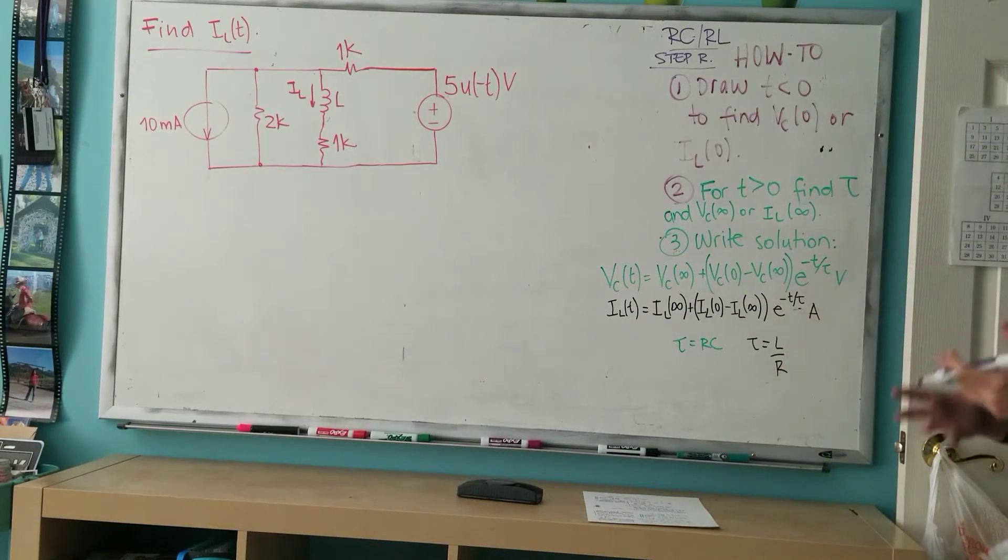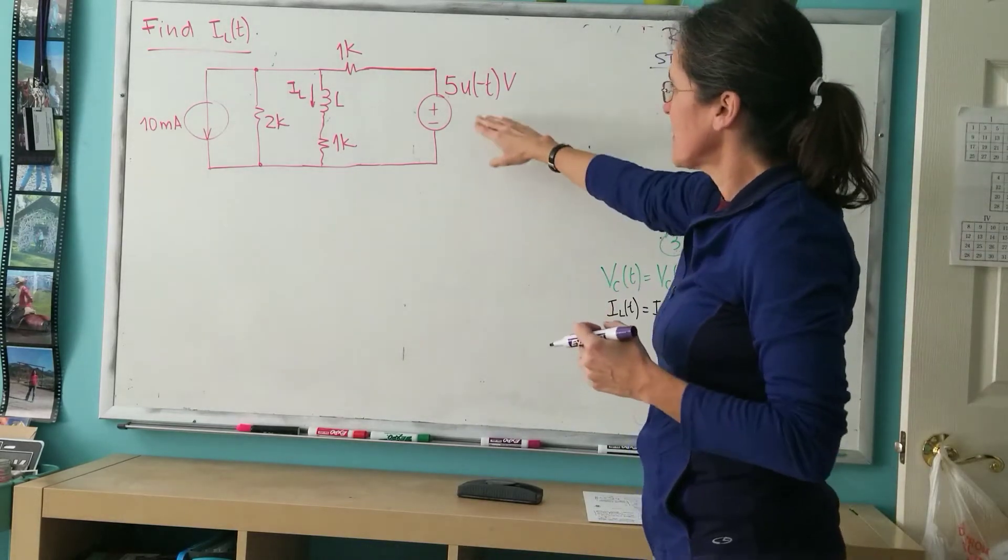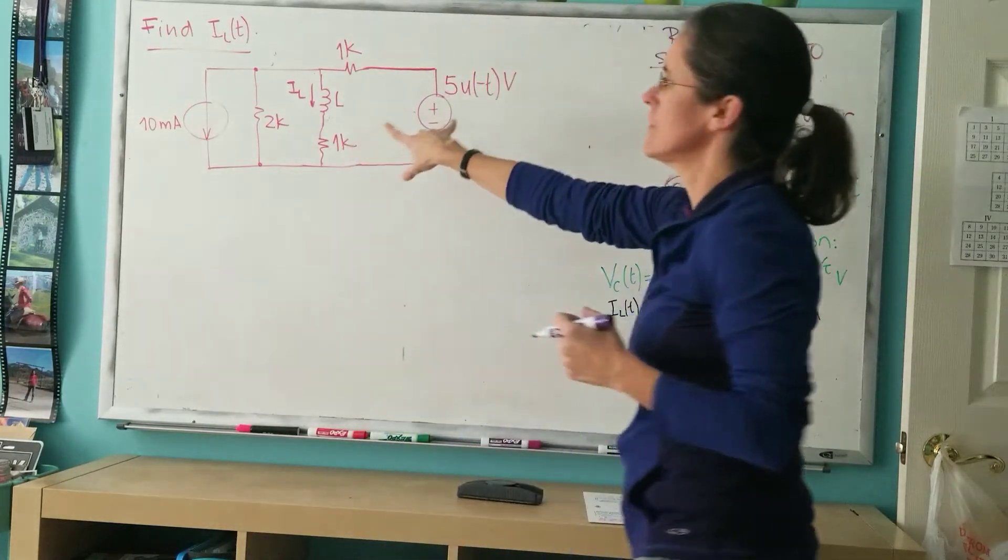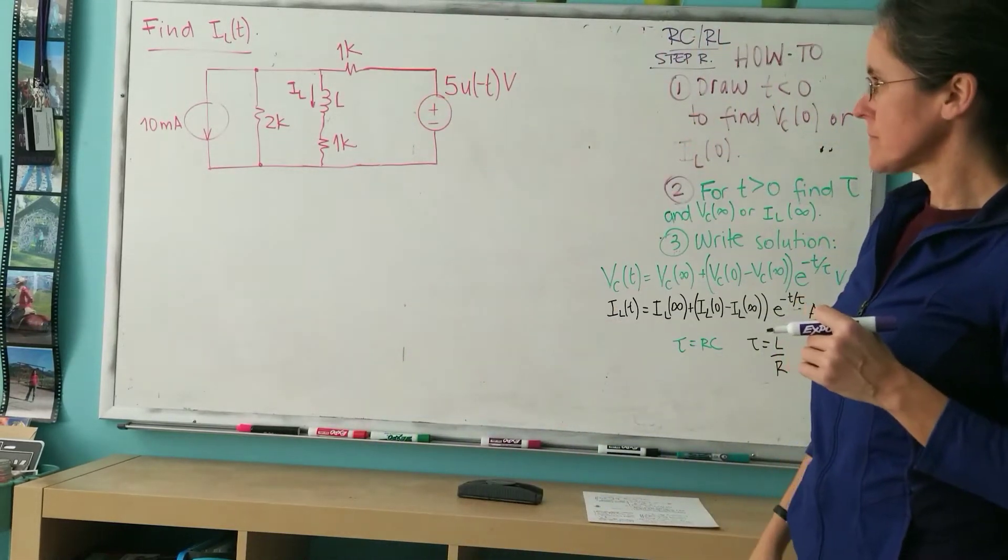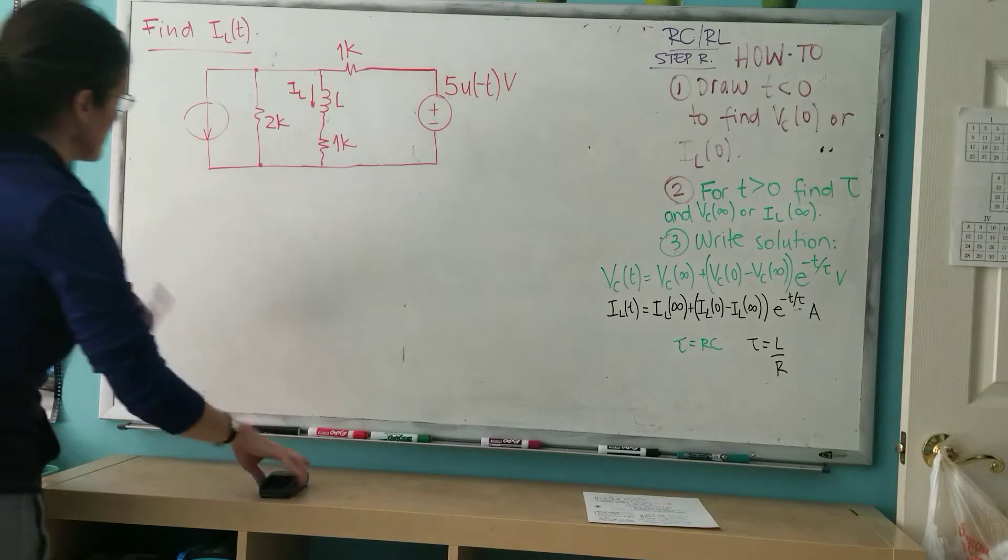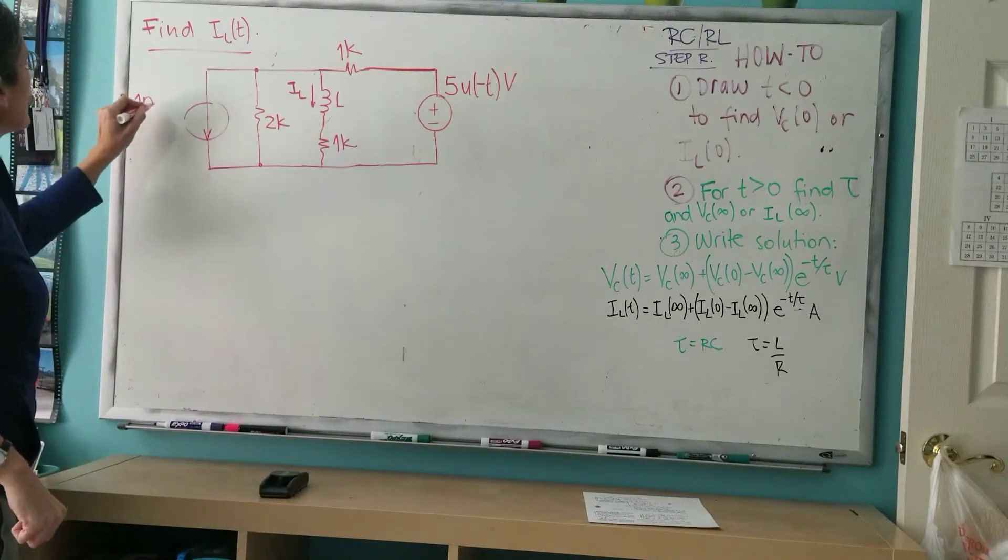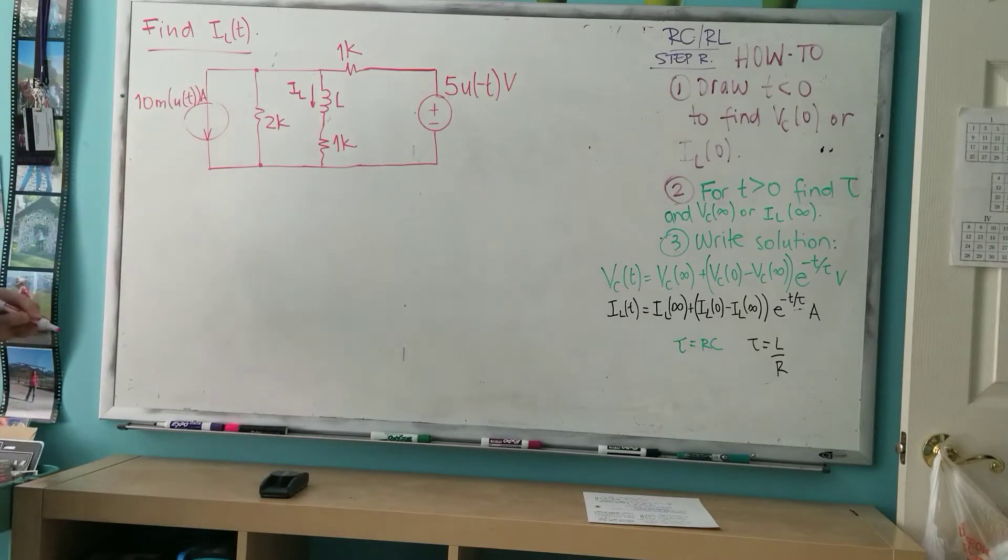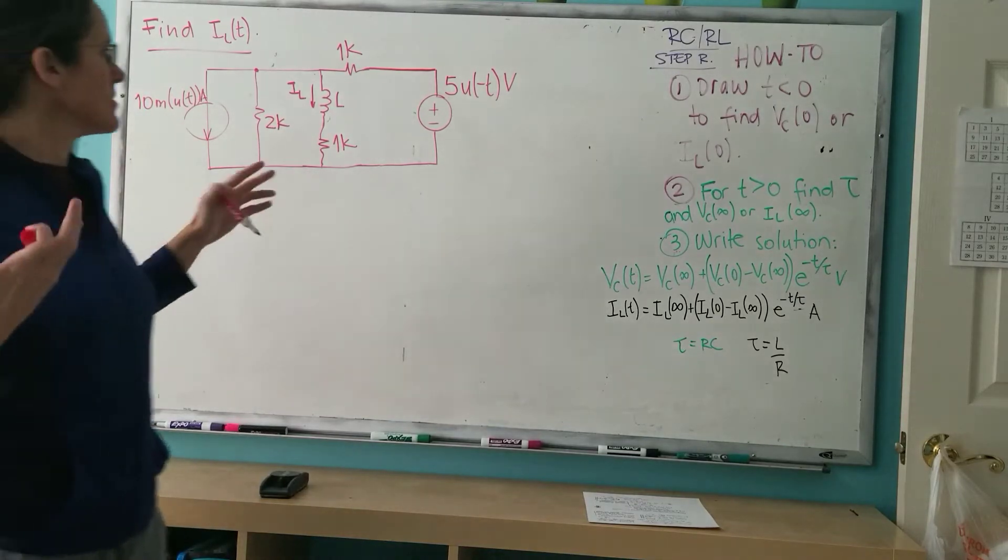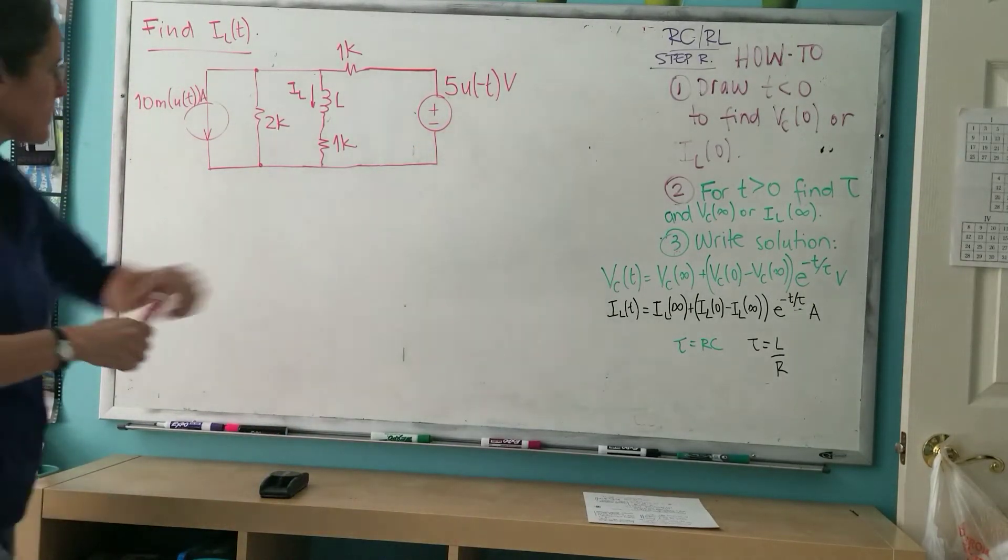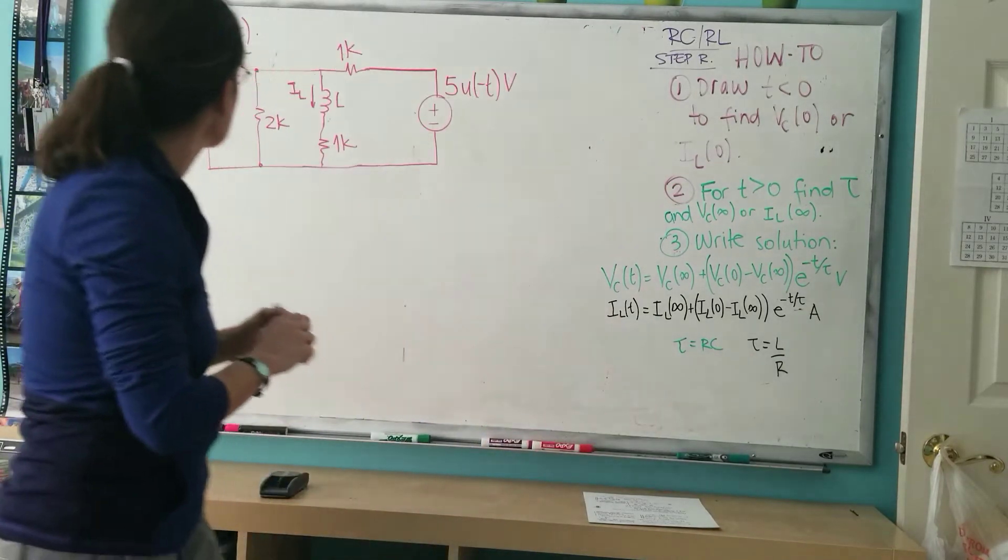This is an example circuit. There is one inductor, several resistors, and two power supplies. I'll make this U(t) to make it more interesting. The question here is there's 10 milliamps turning on at U(t), which means it's zero until time starts, until t equals zero. This one is five volts until t equals zero, so they're the opposite of each other.